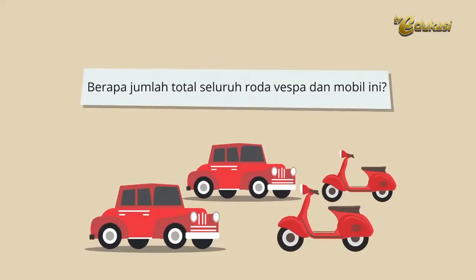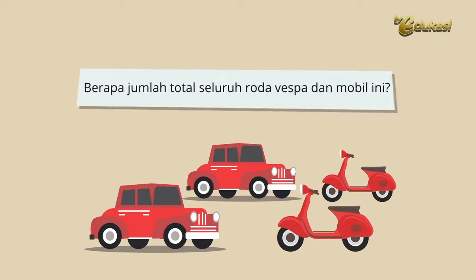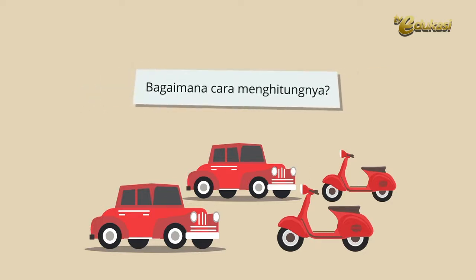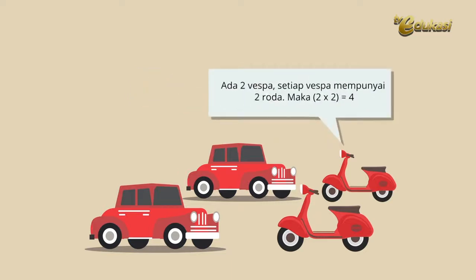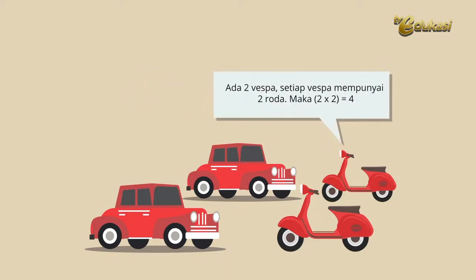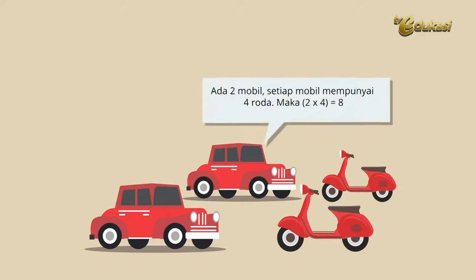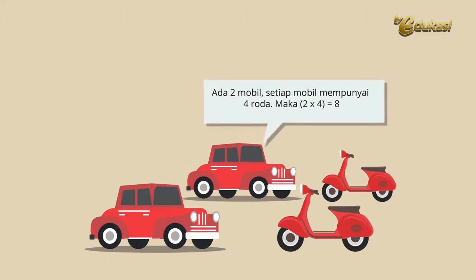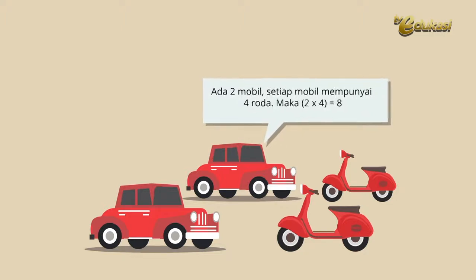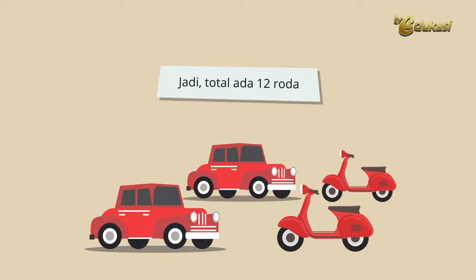Berapa jumlah total seluruh roda Vespa dan mobil ini? 12. Bagaimana cara menghitungnya? Ada dua Vespa, setiap Vespa mempunyai dua roda. Maka, (2 dikali 2) sama dengan 4. Ditambah, ada dua mobil. Setiap mobil mempunyai 4 roda. Maka, (2 kali 4) sama dengan 8. Jadi, total ada 12 roda.